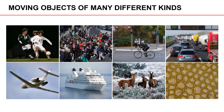Multi-object tracking is about tracking objects that are moving. Exactly what we mean by moving objects depends on the context and what we are interested in. For example, it can be humans, such as football players,